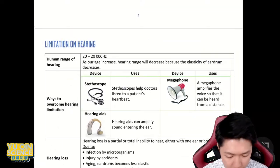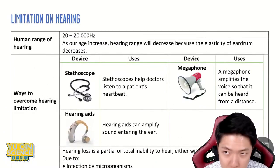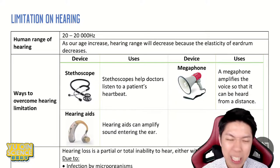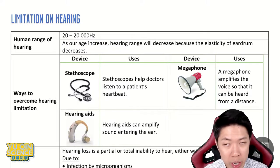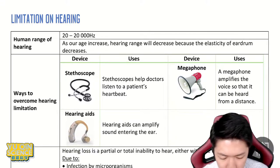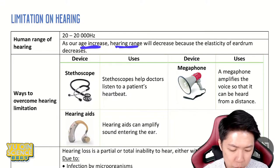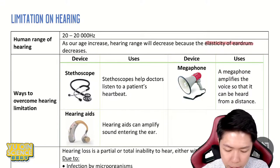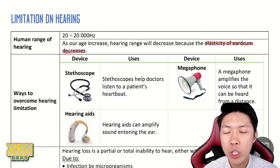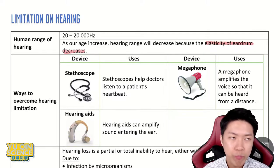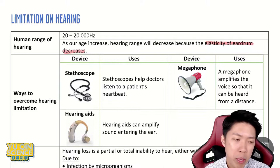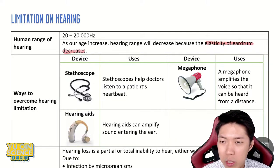The last topic related to hearing will be limitation of hearing. Human hearing range is 20 to 20,000 hertz, which we already learned in Form 2, Chapter 8. As you age, your hearing range will decrease because the elasticity of the eardrum decreases — no longer 20 to 20,000, maybe narrower like 50 to 15,000.